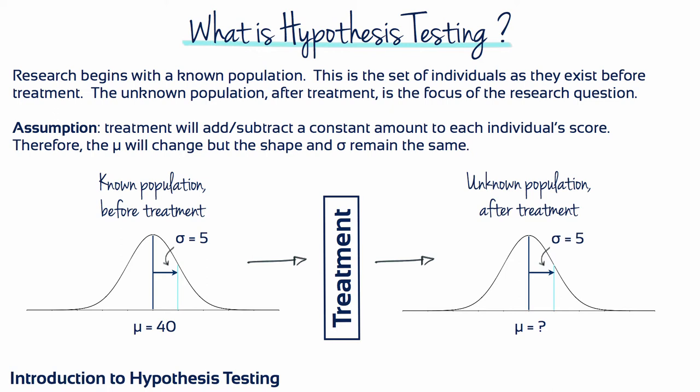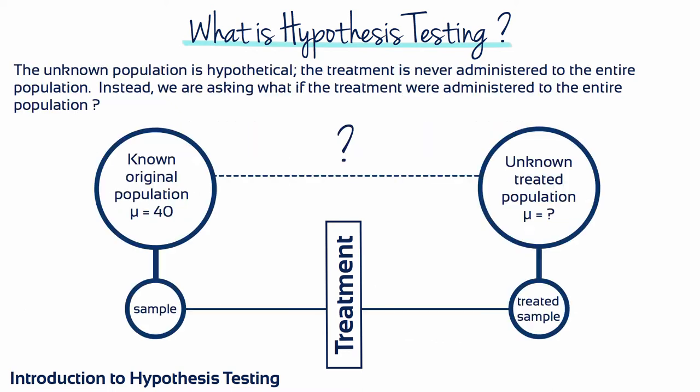The purpose of research is often to determine the effect of a treatment or manipulation. In other words, the goal is to determine what happens to the population after the treatment is administered. The unknown population is hypothetical, in the sense that the treatment is never administered to the entire population. Instead we're asking, what if that were to happen?